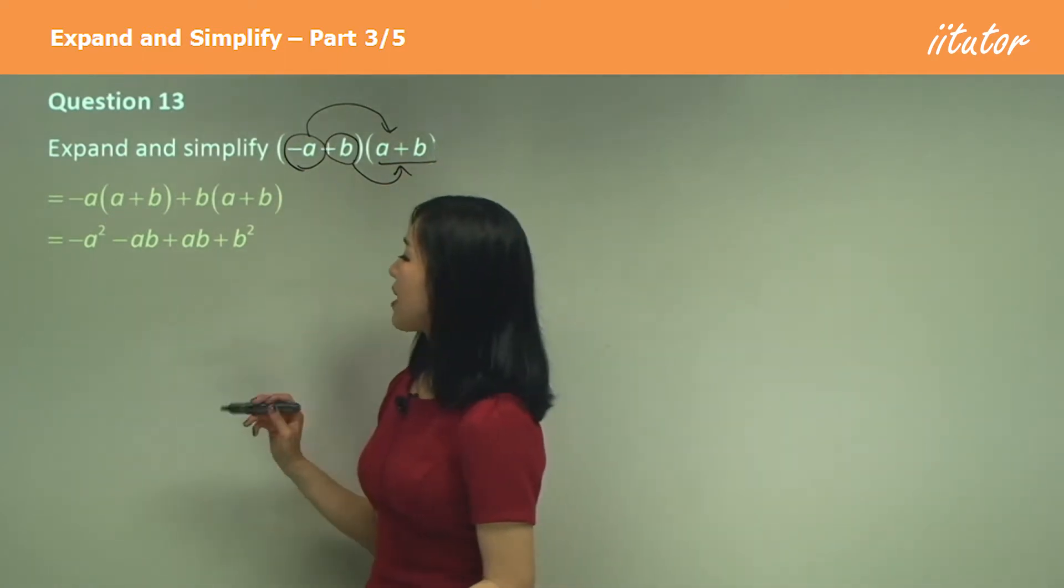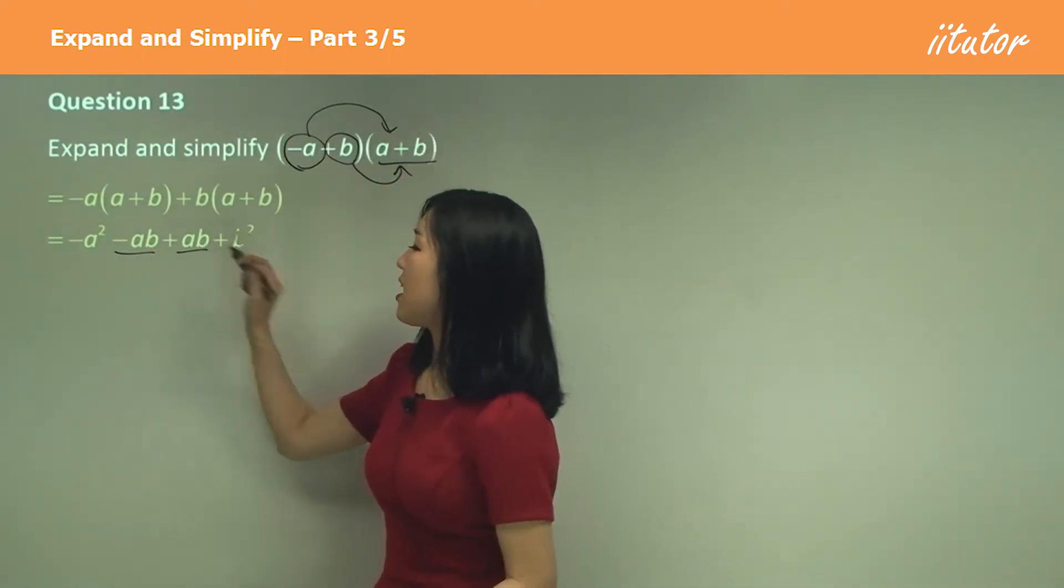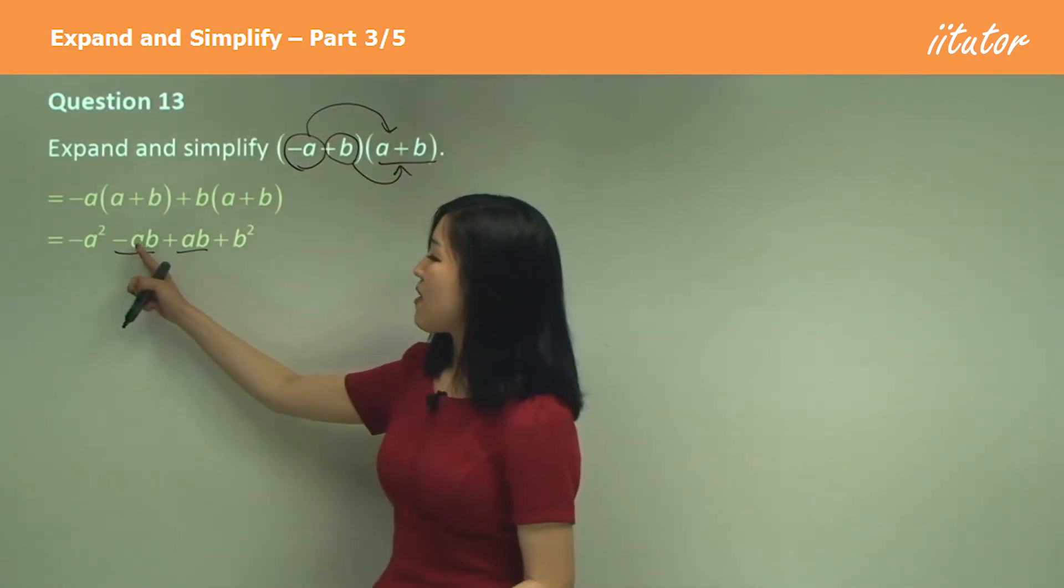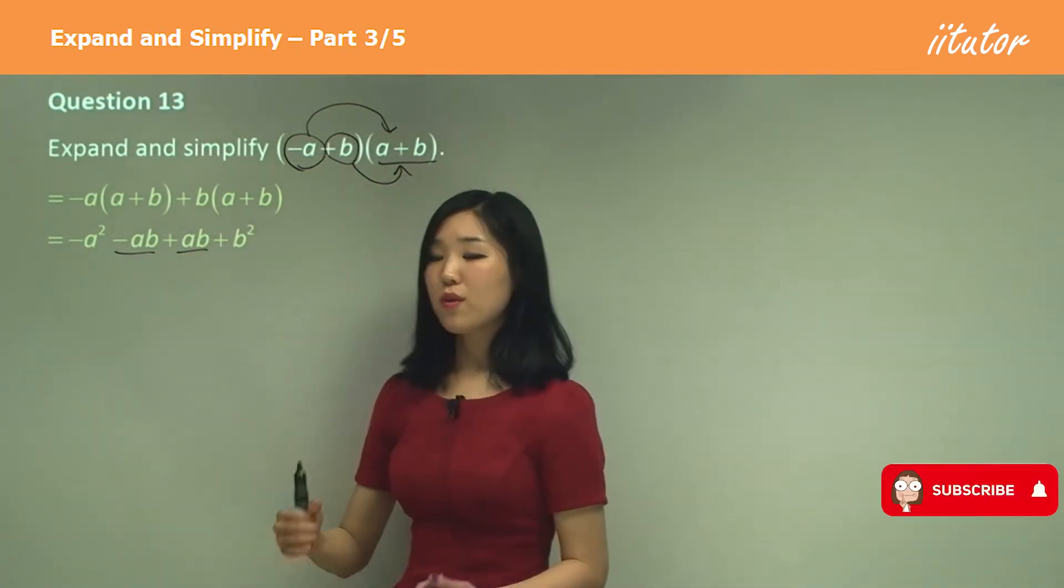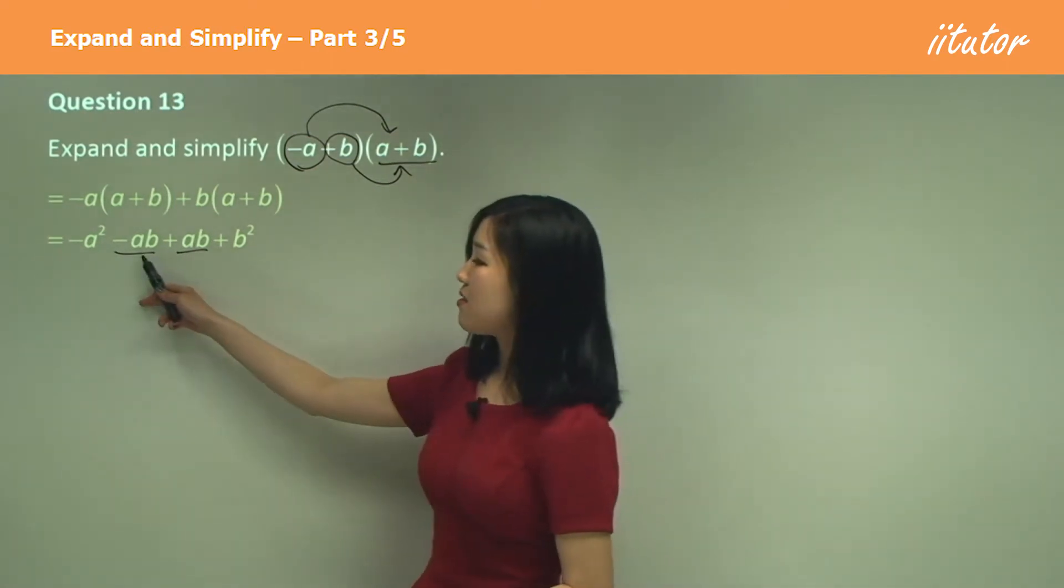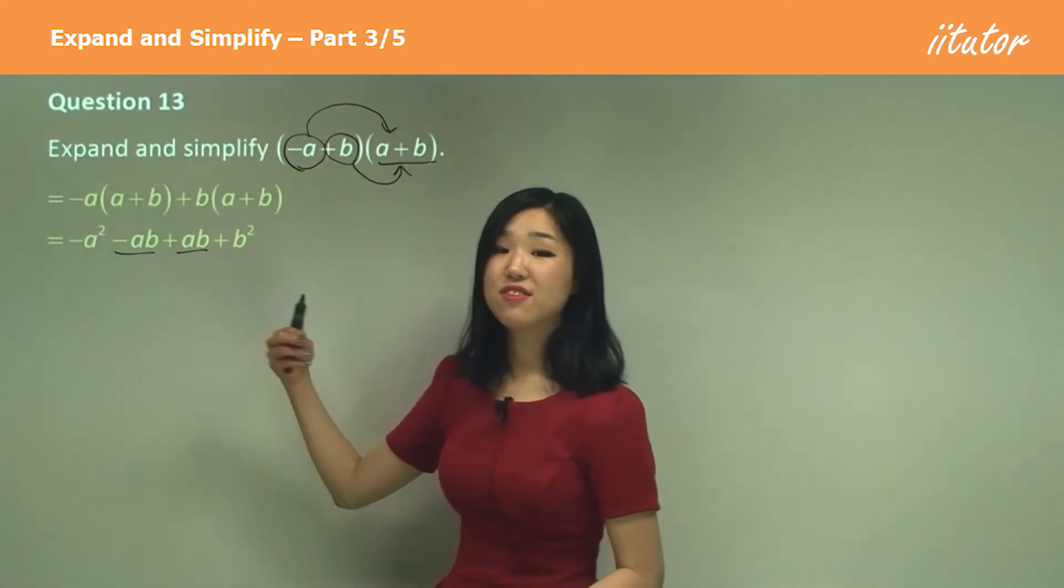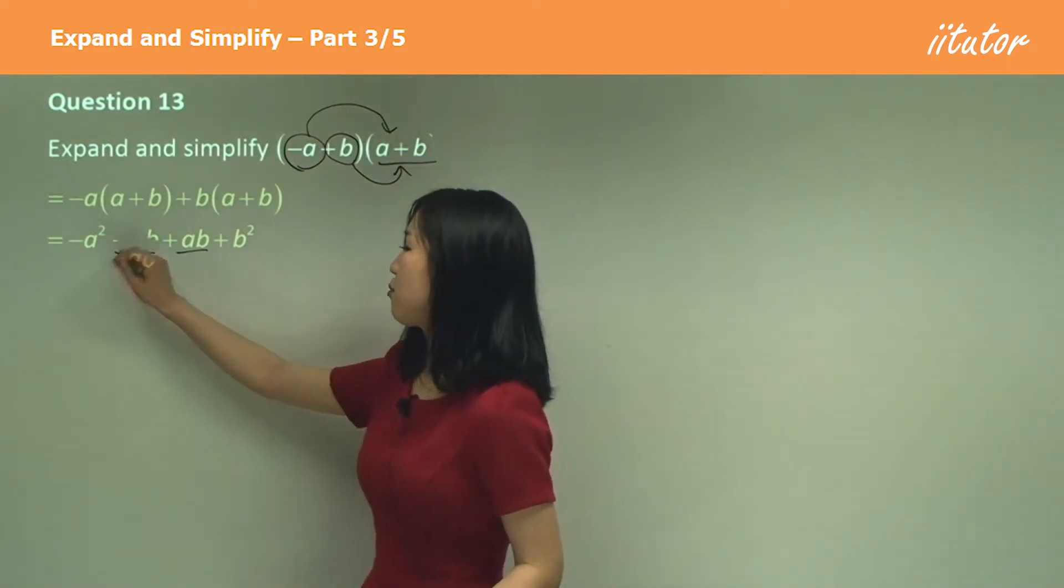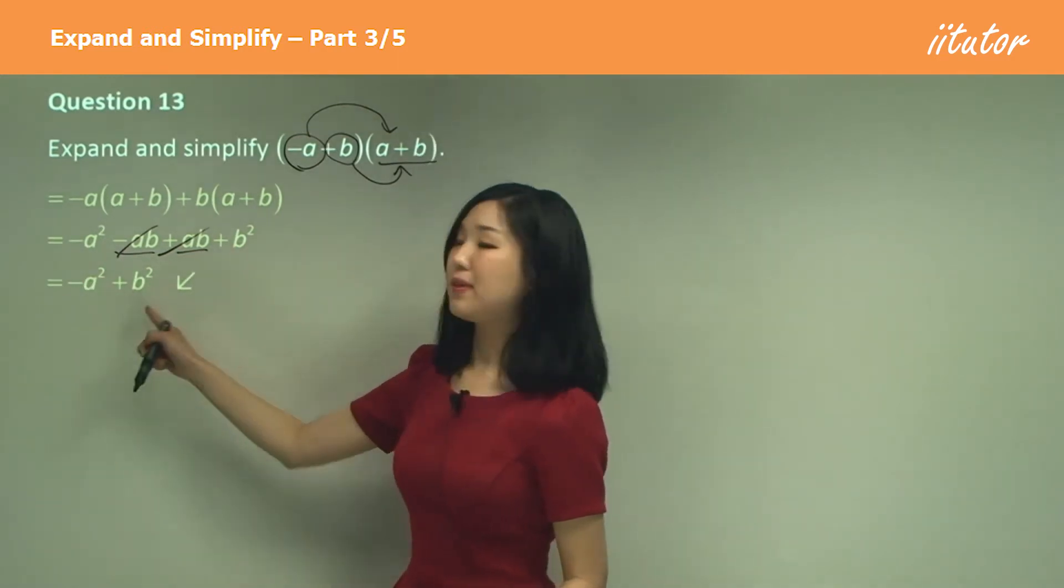And have a look, we've got like terms again. We've got ab here and ab here. They are common, aren't they? But what is negative ab plus ab? What's negative one plus one? Zero. So negative ab plus ab is zero ab, which is just zero. So they actually just cancel out. We can just put a cross through them. So we just have negative a squared plus b squared.